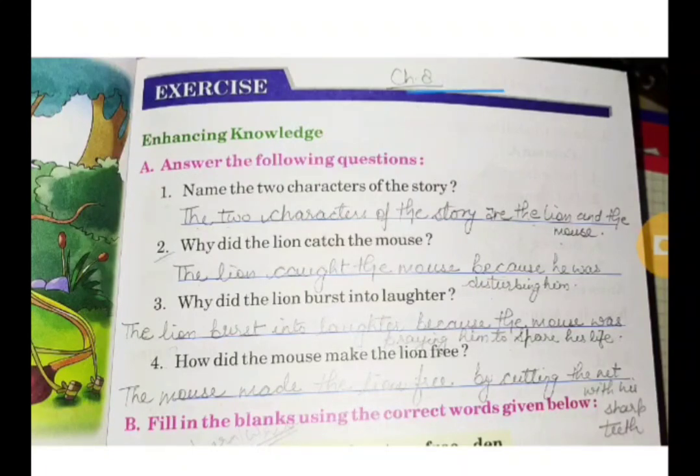The first question is: Name the two characters of the story. The answer is the two characters of the story are the lion and the mouse.